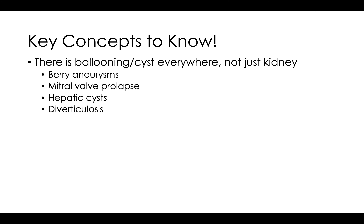Next, going down to the heart: what would be a ballooning in the heart? A mitral valve prolapse — that's where the valve balloons the opposite direction, causing your blood to go from your left ventricle back up to your left atria. Keep going down to the liver: you could have hepatic cysts.